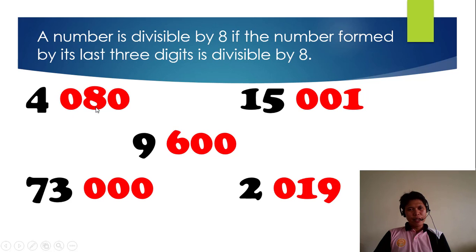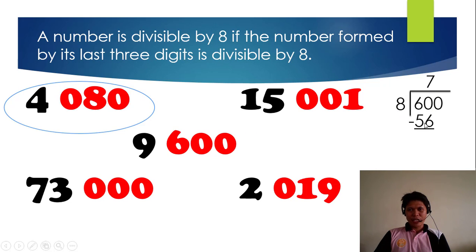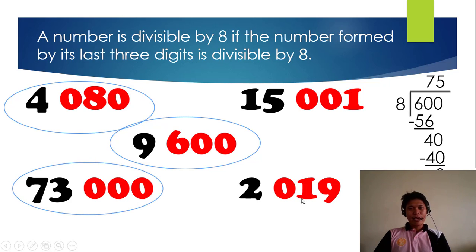4,080: the number formed by the last 3 digits is 080, or 80. 80 is divisible by 8, so it is divisible by 8. 15,001: the last 3 digits form 001, or 1. 1 is not divisible by 8, so it's not. 9,600: the last 3 digits form 600. 600 divided by 8 — 60 divided by 8 is 7, 7 times 8 is 56, 60 minus 56 is 4, bring down 0, 40 divided by 8 is 5, 5 times 8 is 40, 40 minus 40 is 0 — so 600 is divisible by 8, therefore 9,600 is also divisible by 8. 73,000: the last 3 digits form 000, or 0. 0 is divisible by all numbers, so this is divisible by 8. And 2,019: 19 is not divisible by 8, so this is not divisible by 8.